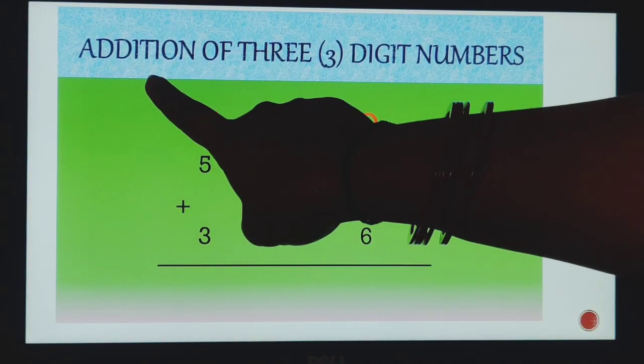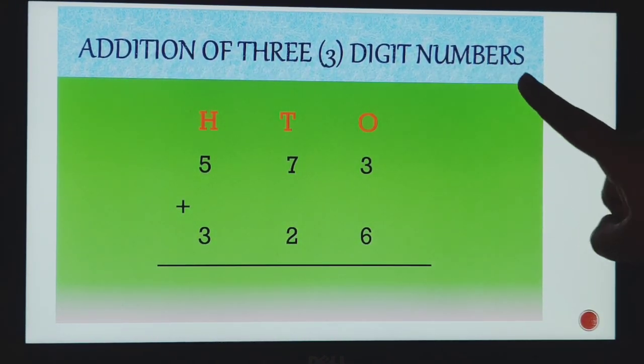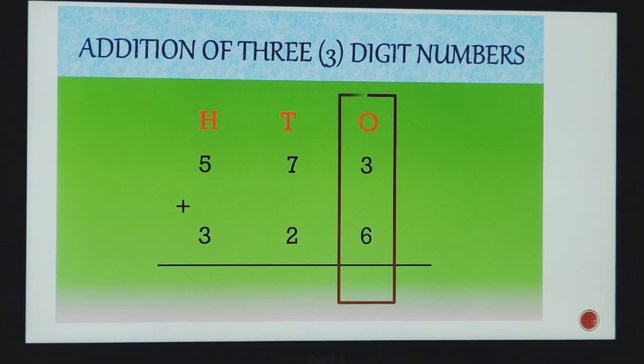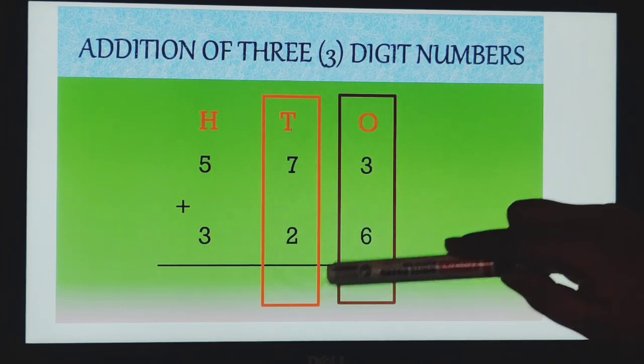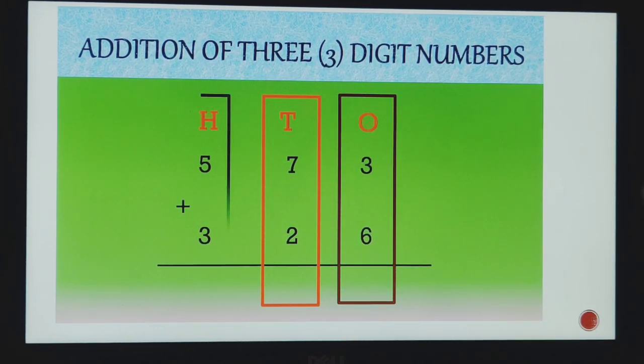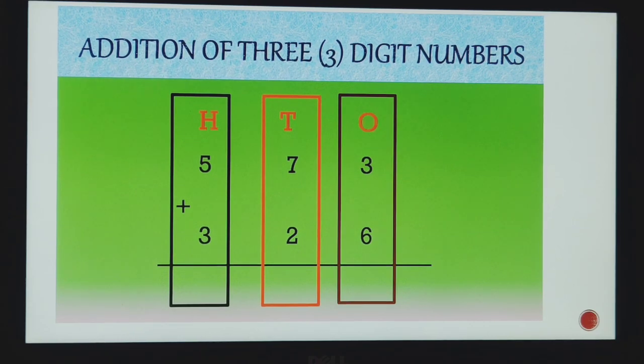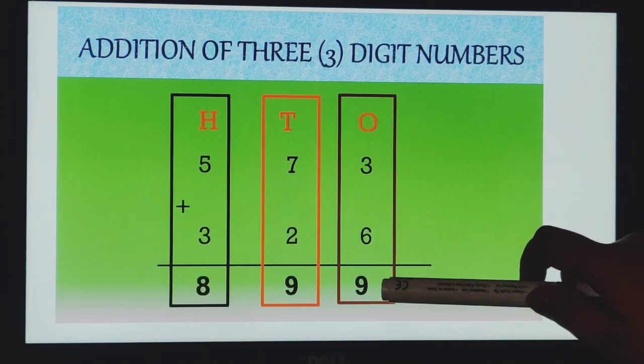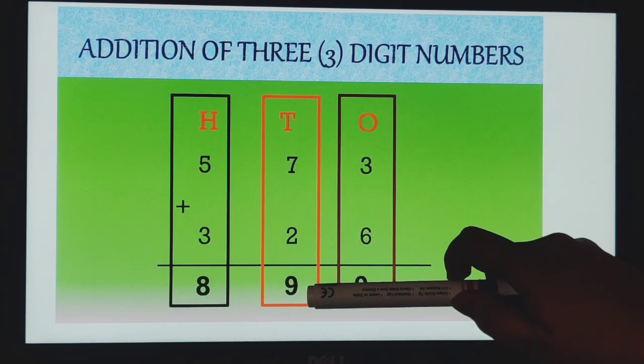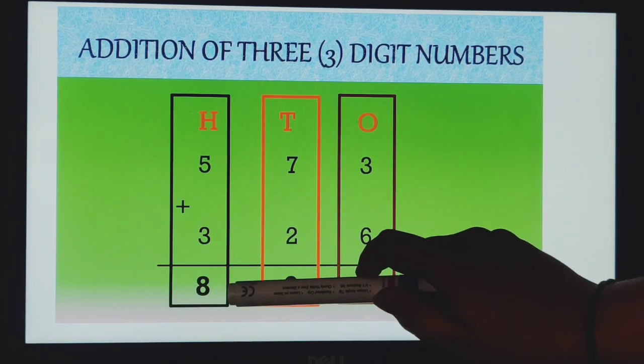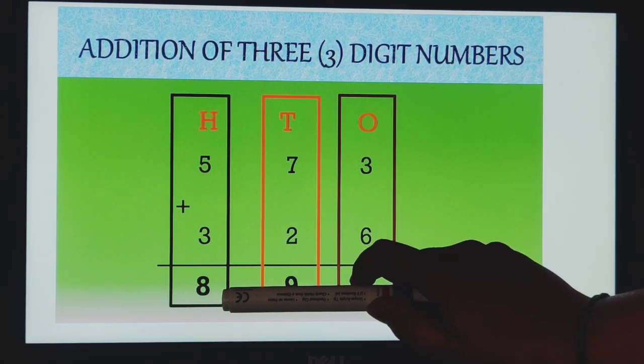Now let's see addition of 3-digit numbers. Students, this is our ones place, this is our tens place, and this is our hundreds place. Okay, now when we are doing addition, we have to start addition with ones place. That is 3 plus 6, we got the answer 9. Then 7 plus 2, we got the answer 9. 5 plus 3, what answer we will get? It's 8.